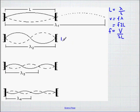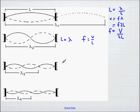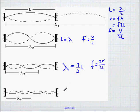For the next mode, the length equals one full wavelength, so frequency equals V over L. For the mode after that, the wavelength equals two-thirds of the length, so frequency equals 3V over 2L. And for the following mode, the wavelength equals half the length, so frequency equals 2V over L.